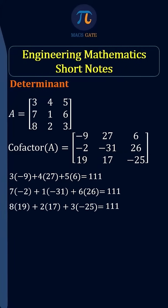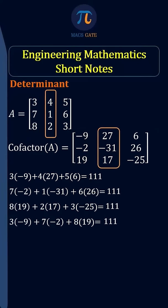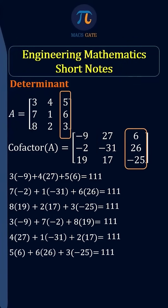Let us do it for columns. Multiply the first column elements with corresponding cofactors and add — the result is the same, which is 111. Multiply the second column elements with corresponding cofactors and add — we get the same answer, 111. Finally, multiply the third column elements with corresponding cofactors and add — the result is the same, which is 111, and this 111 is what is known as the determinant of the matrix.